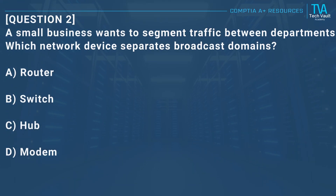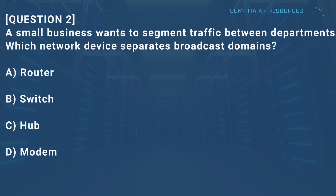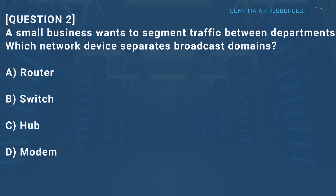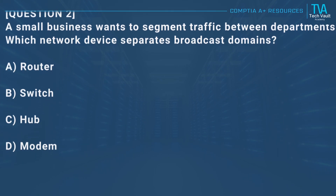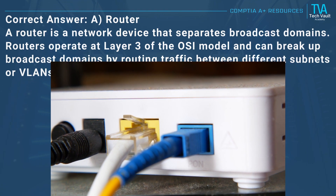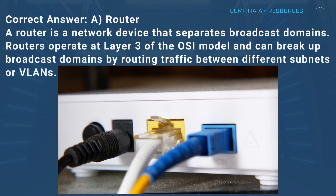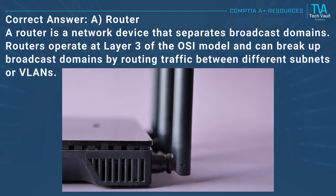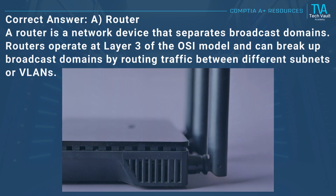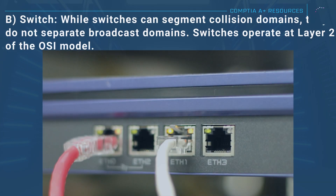Question 2: A small business wants to segment traffic between departments. Which network device separates broadcast domains? A, router. B, switch. C, hub. D, modem. Correct answer: A, router. A router is a network device that separates broadcast domains. Routers operate at layer 3 of the OSI model and can break up broadcast domains by routing traffic between different subnets or VLANs.